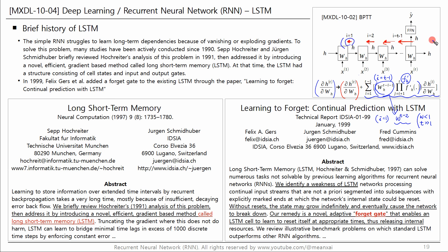To solve this problem, many studies have been actively conducted since 1990. According to the abstract of this paper, Sepp Hochreiter and Juergen Schmidhuber briefly reviewed Hochreiter's 1991 analysis of this problem, then addressed it by introducing a novel, efficient, gradient-based method called long short-term memory, LSTM.